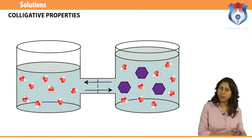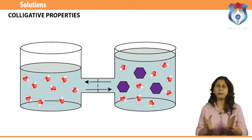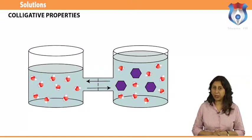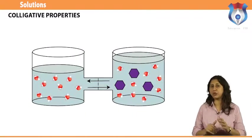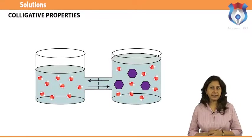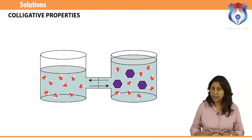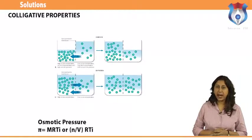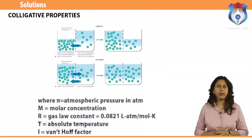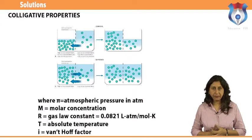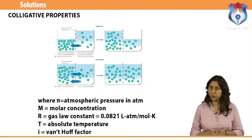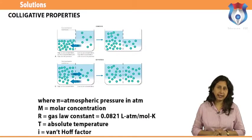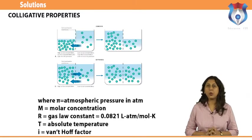Osmosis is the net movement of solvent molecules through a semi-permeable membrane from a pure solvent or from a dilute solution to a more concentrated solution. A semi-permeable membrane allows solvent molecules to pass through but blocks passage of solute molecules. Osmotic pressure is given by: π = MRTi or π = (n/V)RTi, where π = osmotic pressure in atm, M = molar concentration, R = gas law constant = 0.0821 L·atm/mol·K, T = absolute temperature, and i = Van't Hoff factor.